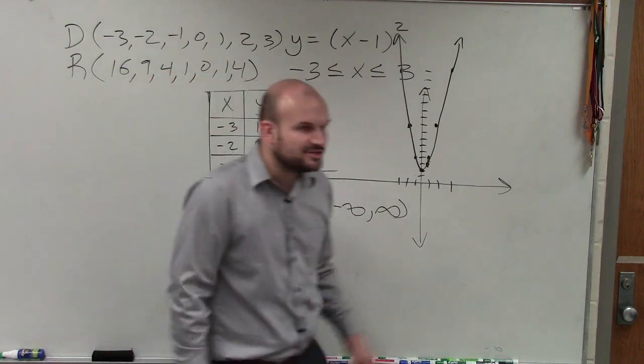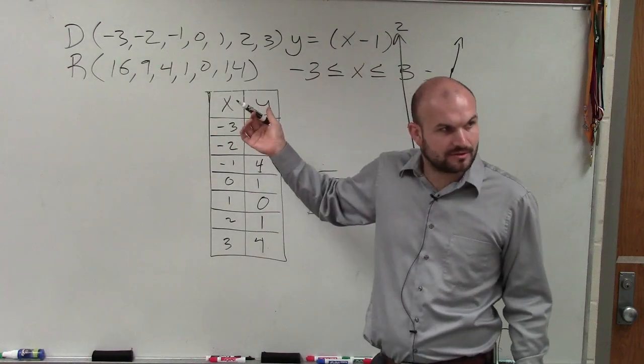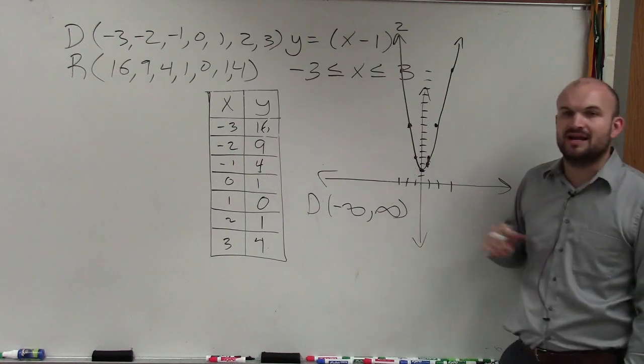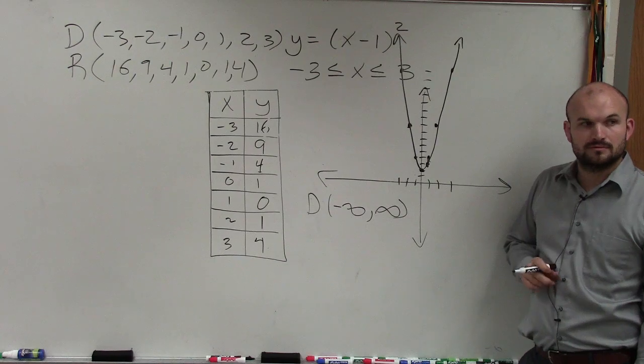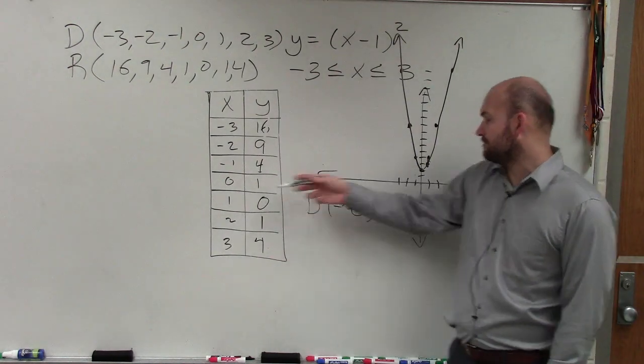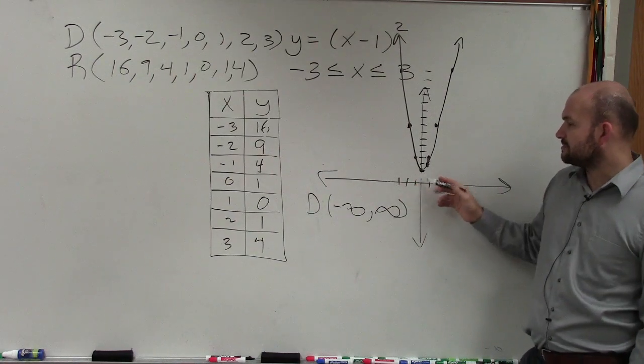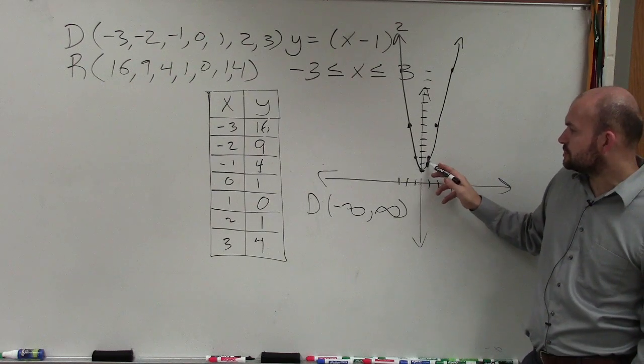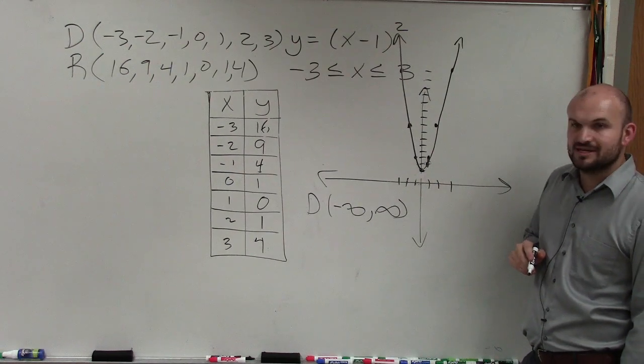Now the range is the set of all y values, or output values. Let's look at that. Is there a point on this graph that has a y value of 2? Yeah, it's right there. There's two little points over here that were at y equals 2. What about when y equals 0? That's 0, 1. I just didn't graph that.